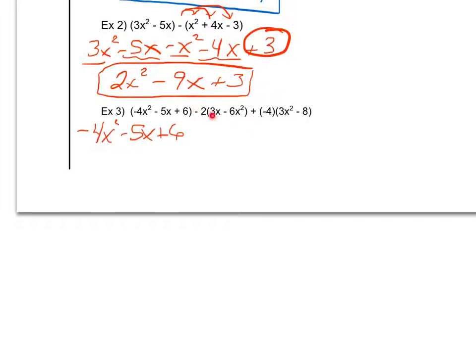My second set of parentheses, I have no like terms, but I have something in front. I have a minus 2 in front. So I'm not only going to distribute the 2, I'm not only going to distribute the minus, I'm actually going to distribute the full minus 2 since that full quantity is in front. So distributing it in, I get minus 6x and plus 12x squared.